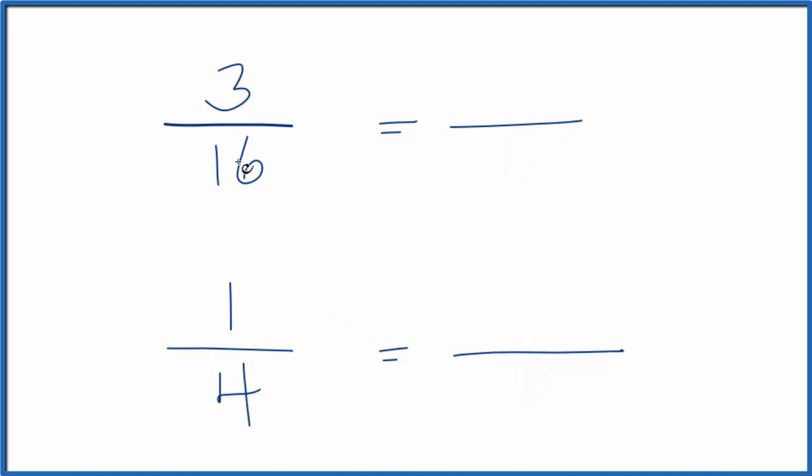So 4 times 4 would equal 16. So we could multiply this by 4 divided by 4. 4 divided by 4, that's just 1. So we haven't changed anything, but now 1 times 4, that's 4. 4 times 4, that's 16.